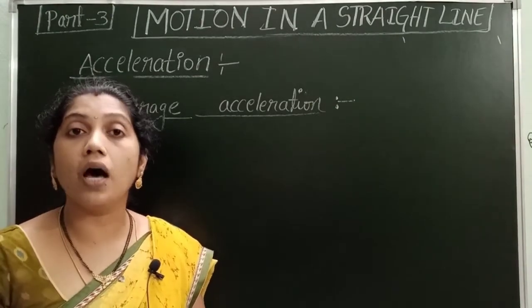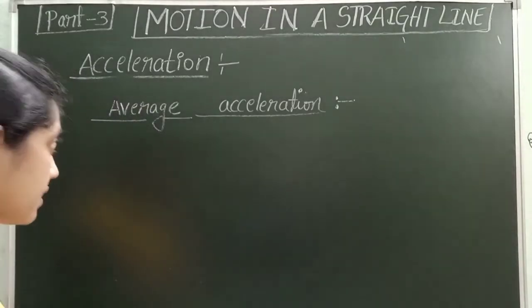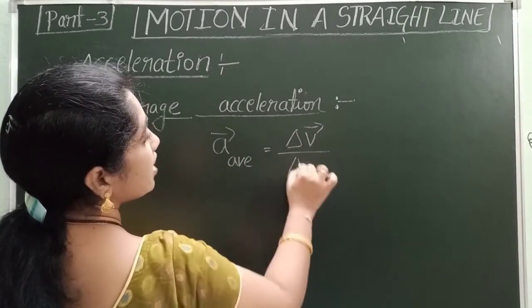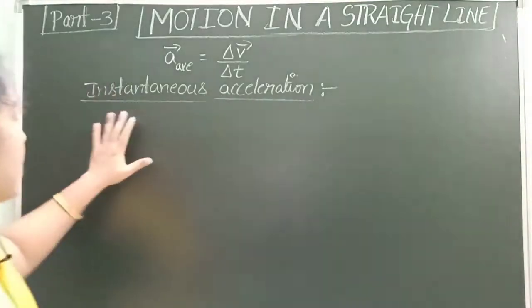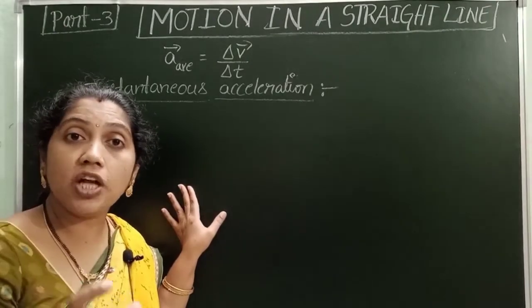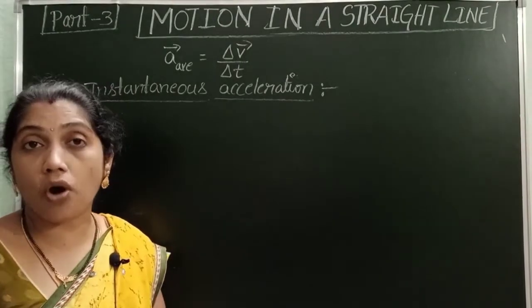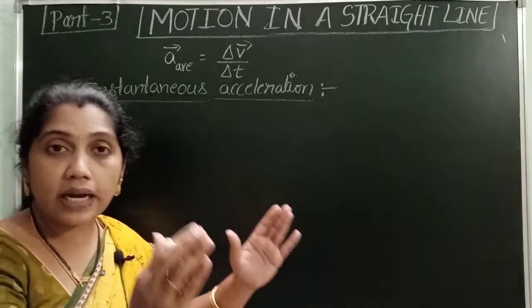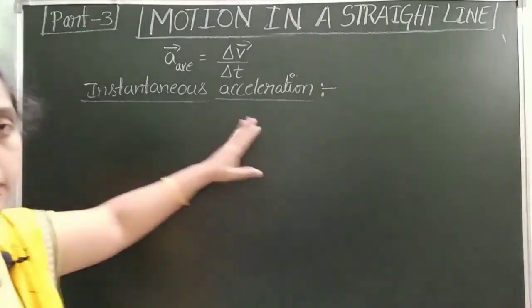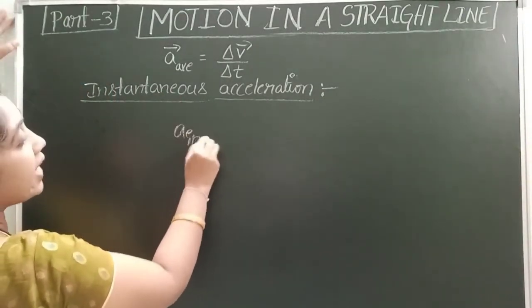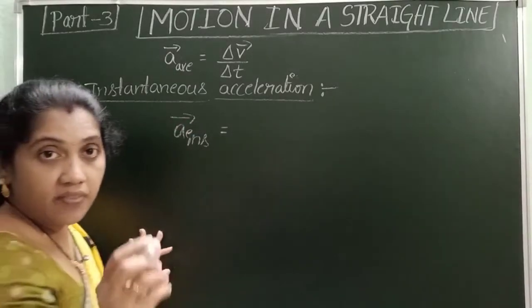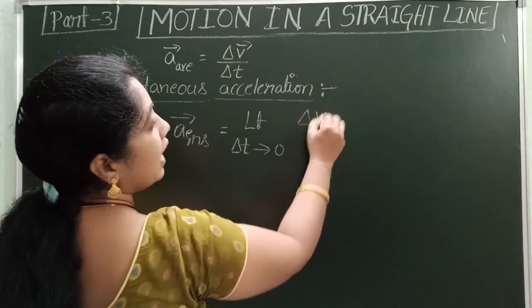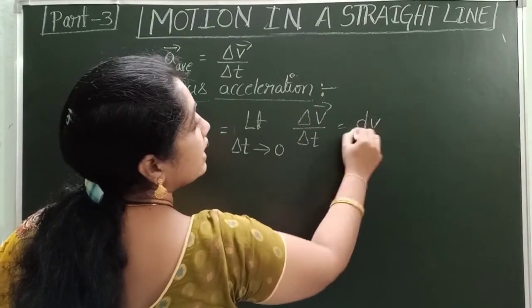Average acceleration is the total change in velocity divided by the total time taken. Instantaneous acceleration is the acceleration of a body at any particular instant of time — when time interval delta t is very very small. Instantaneous acceleration equals the limit as delta t tends to zero of delta v-bar by delta t, which equals dv by dt.